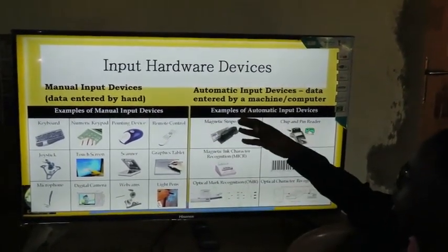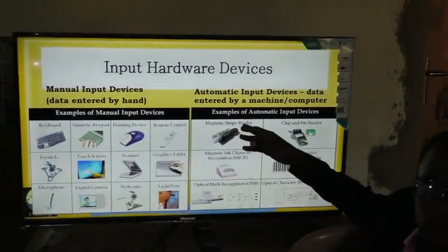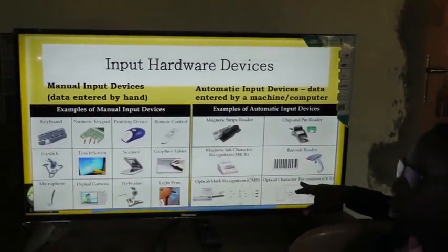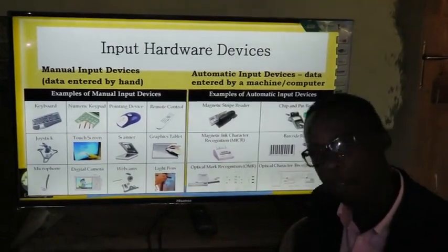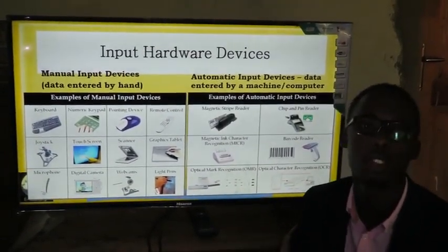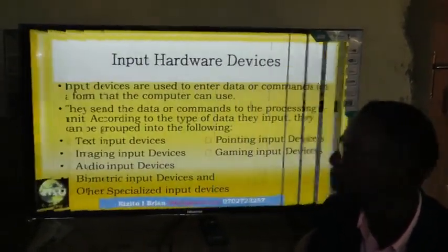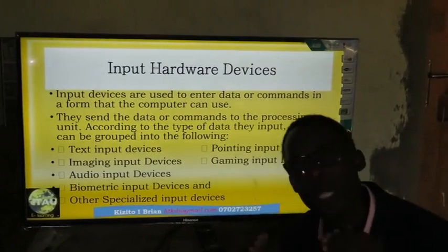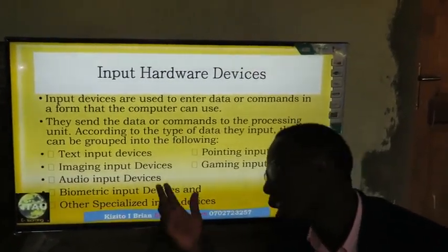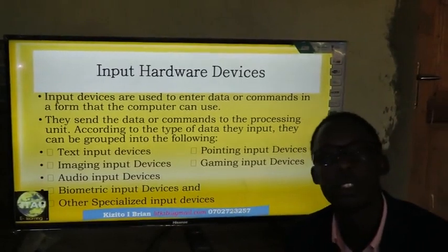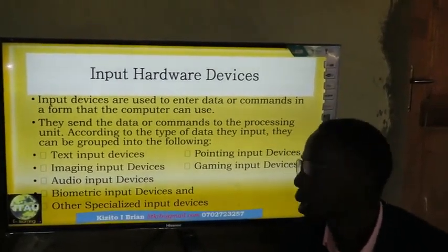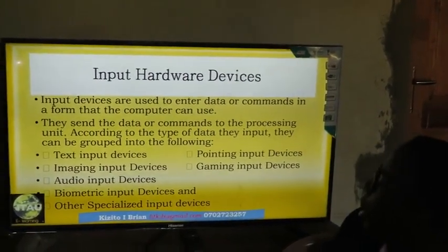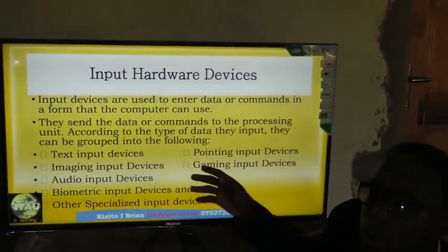Automatic input devices include magnetic strip card readers used in supermarkets and optical character recognition devices — these have automatic data entry into the computer. Input devices are further grouped into categories based on the type of data they enter: text input devices, audio input devices, video input devices, biometric devices, and gaming or pointing devices.